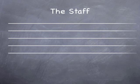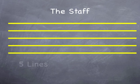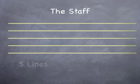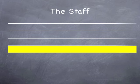As you can see, a staff has five lines, and in between the five lines are four spaces.